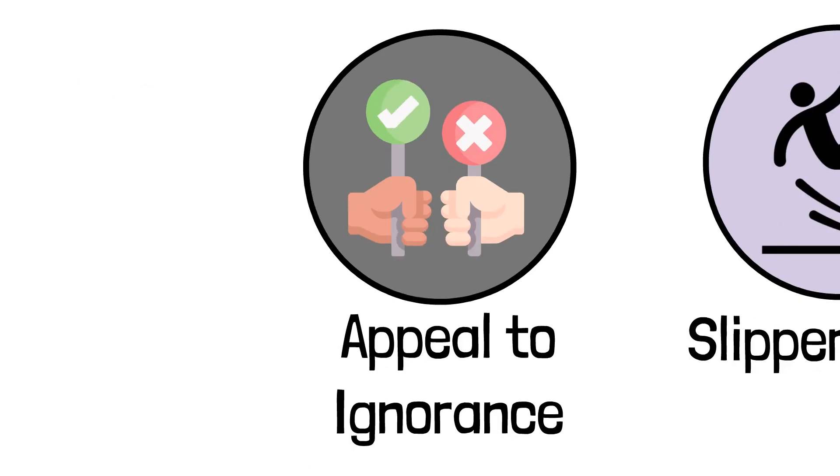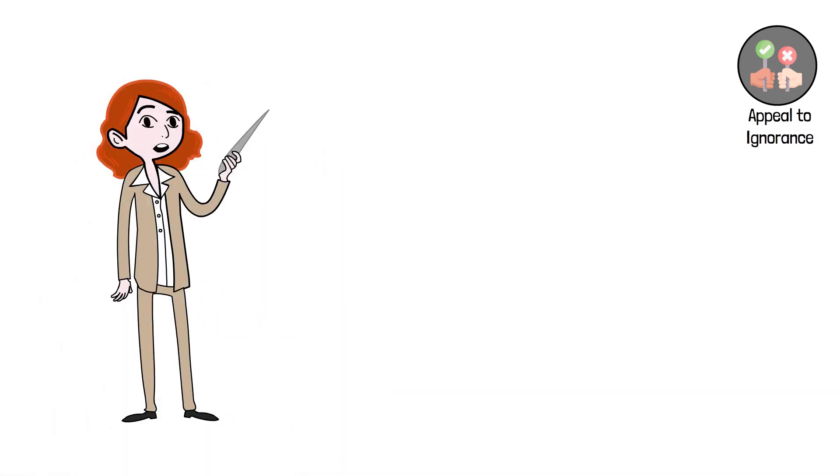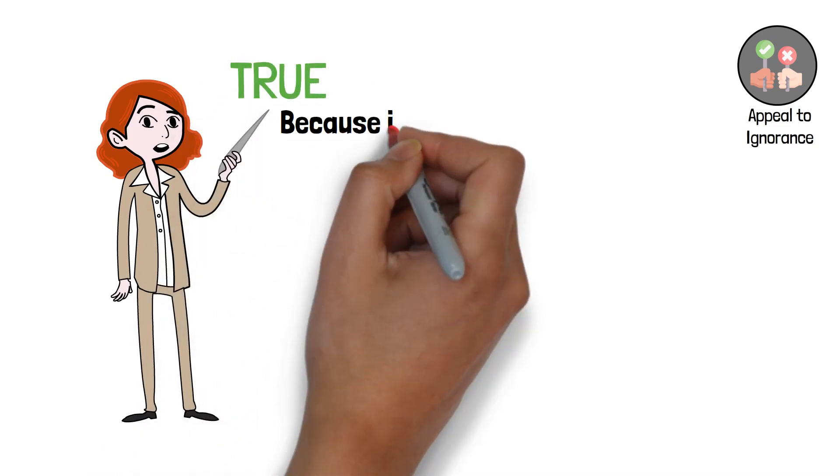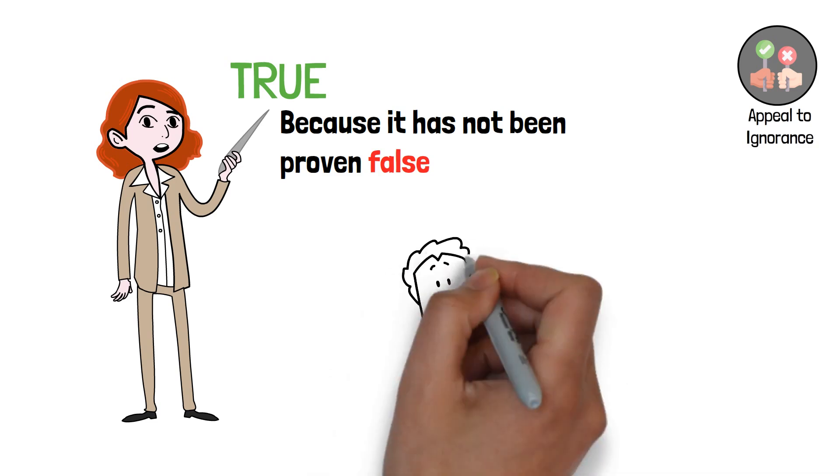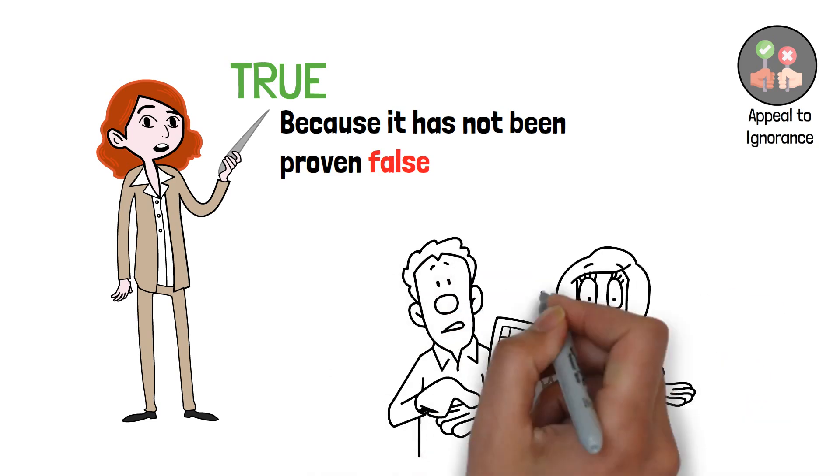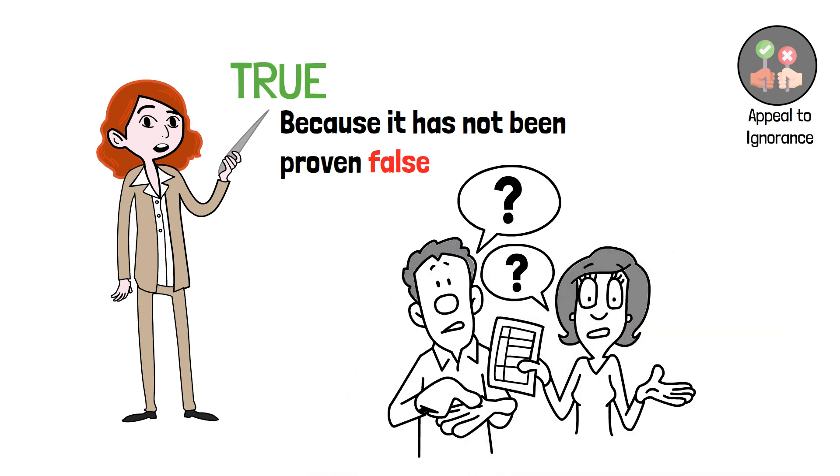6. Appeal to ignorance. This fallacy occurs when someone argues that a claim is true or false simply because it has not been proven false or true. It relies on the absence of evidence to support a claim rather than presenting positive evidence. However, the lack of evidence does not necessarily prove or disprove the claim itself.